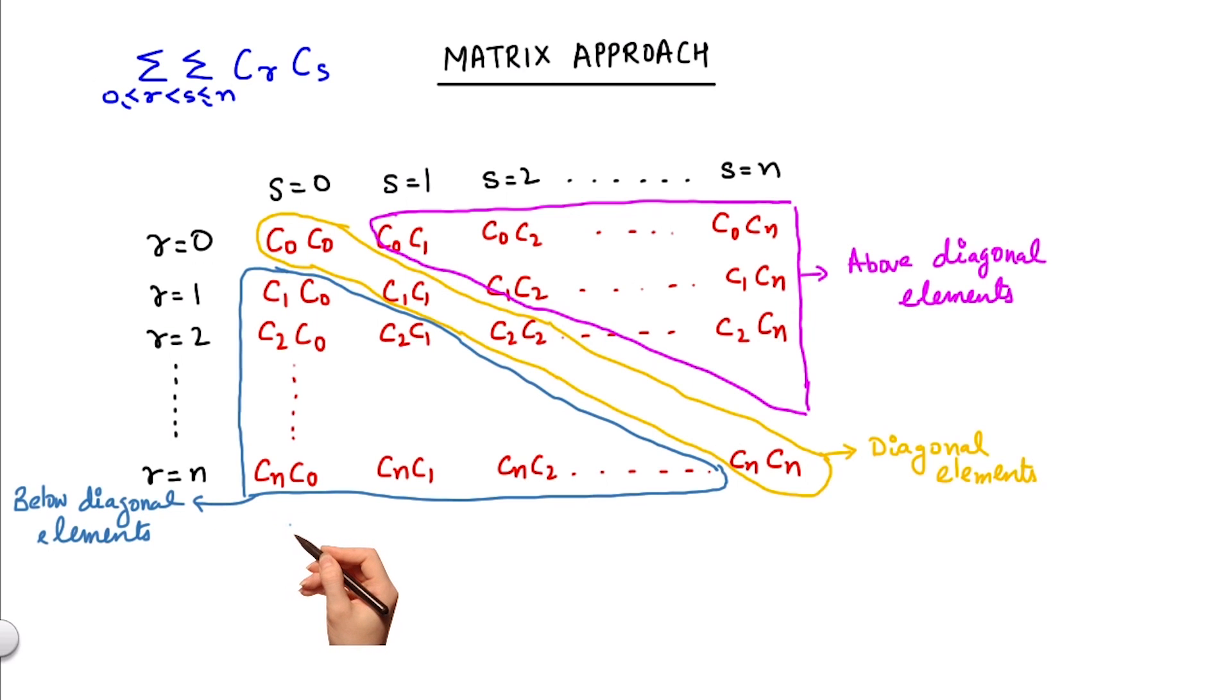Now it should be clear by observation that the elements above the diagonal and the elements below the diagonals are equal in value. For example, this C1 C0 equals this C0 C1. This C2 C0 equals this C0 C2. This C2 C1 will equal this C1 C2.